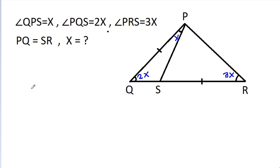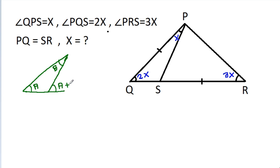So, in any triangle, if this angle is A and this angle is B, then the exterior angle is A plus B. So this angle will be 2x plus x, that is 3x. So this angle will be pi minus 3x.